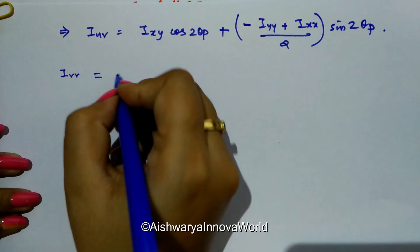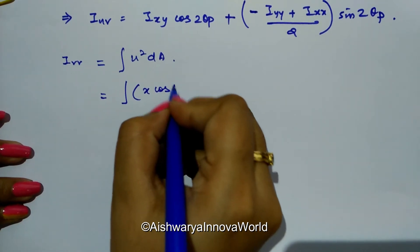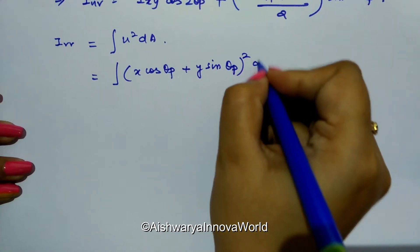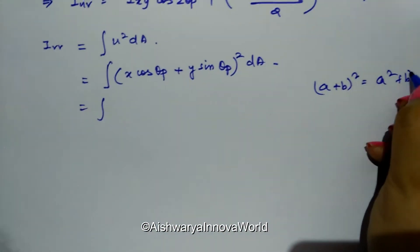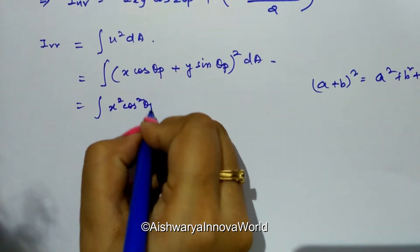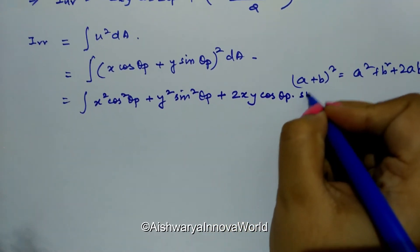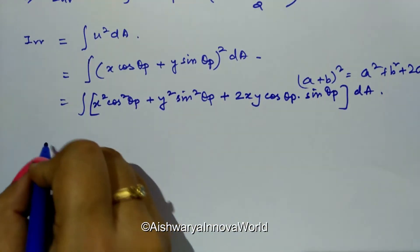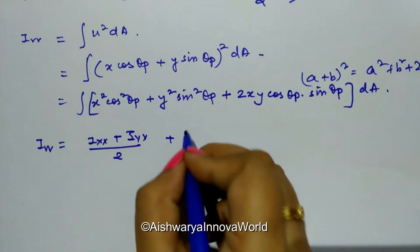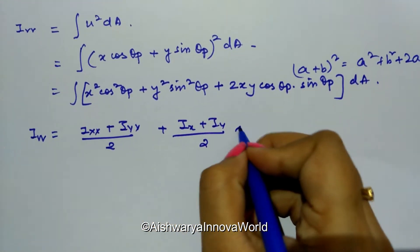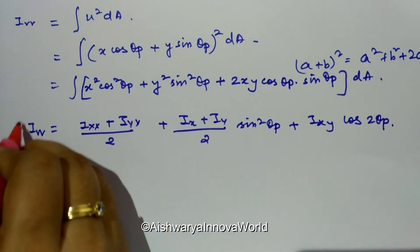Similarly, I_vv = ∫u²·dA. Substituting u = x·cos(theta_p) + y·sin(theta_p), squaring using (a+b)² = a² + b² + 2ab gives: ∫[x²·cos²(theta_p) + y²·sin²(theta_p) + 2xy·cos(theta_p)·sin(theta_p)]·dA. Integrating, the result is: I_vv = (I_xx + I_yy)/2 + (I_xx + I_yy)/2 · sin²(theta_p) + I_xy · cos(2·theta_p). This is another important formula.